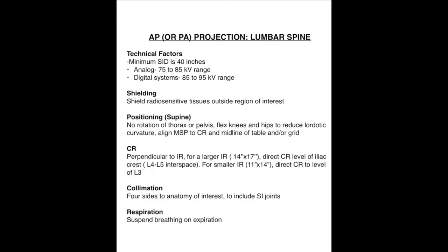For an AP or PA projection, you want to have a minimum SID of 40 inches. For your positioning in supine, you want to have no rotation of the thorax or pelvis. Flex knees and hips to reduce lordotic curvature. For your CR, for a larger IR, direct your CR at the level of the iliac crest, and for a smaller IR, direct at L3. Collimate to include SI joints and suspend breathing on expiration.